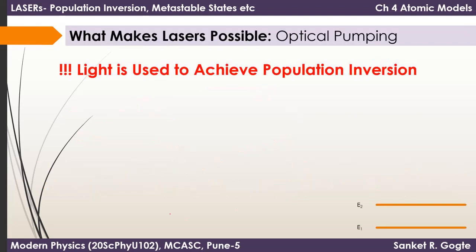Whenever light is used to achieve population inversion, it is called optical pumping — the term is pretty much self-explanatory. We use light or electromagnetic radiation to invert the population so that more systems are in the excited state than the ground state. The frequency of the radiation used must be (E2 minus E1) divided by h, so photons of this frequency are used to achieve population inversion through optical pumping.